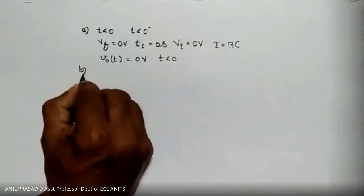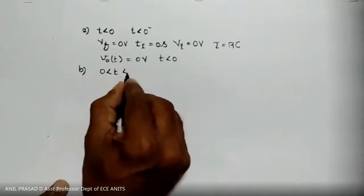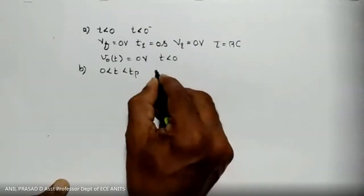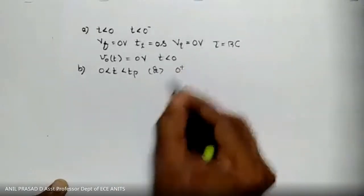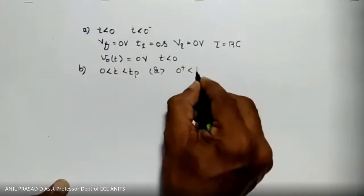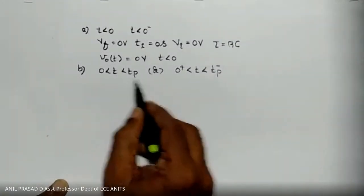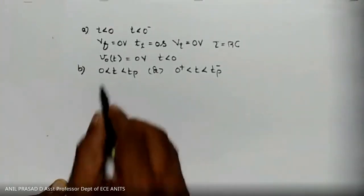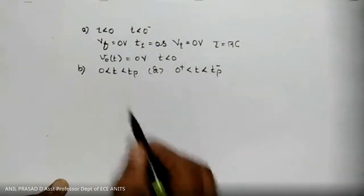The second interval is from 0 to tp — in other words, 0 plus less than t less than tp minus. Over this interval, my input is capital V volts. For finding the output voltage, I use the equation V_out(t) = Vf − (Vf − Vi)·e^(−(t − Ti)/τ).